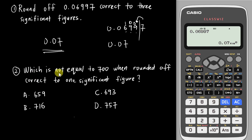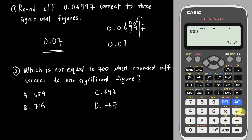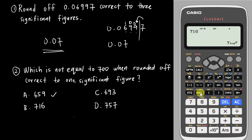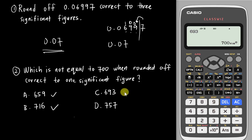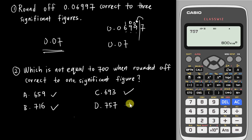Question 2: Which answer is NOT equal to 700 when rounded to 1 Significant Figure? Set the calculator to 1 Significant Figure. Test each option: 659 → press Enter then ENG → 700. 716 → Enter, ENG → 700. 693 → Enter, ENG → 700. 757 → Enter, ENG → 800. So 757 rounded to 1 Significant Figure gives 800, not 700. The answer is D.